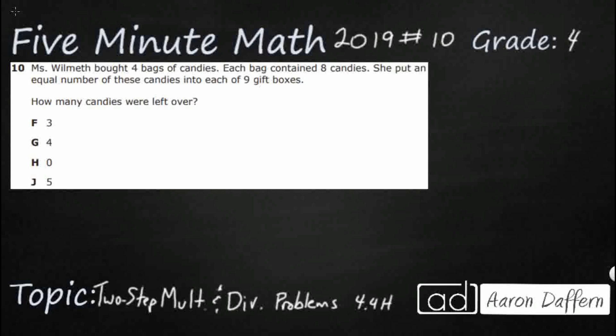So Miss Womath bought four bags of candies. Each bag contained eight candies, so we've got equal groups because each bag has the same amount. When we're dealing with equal groups, that lets us know it's going to be multiplication or division.